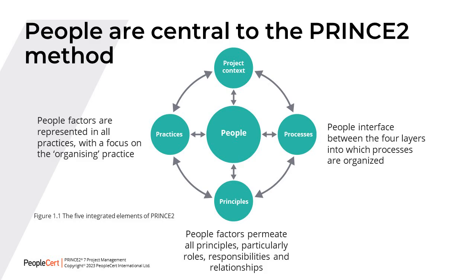The PRINCE2 processes are organised into four layers: commissioning, directing, managing and delivering. People factors such as behaviours, culture and relationships are included in the processes, explaining how people interface between the layers. As a reminder, people are central to the PRINCE2 method. Without them, projects simply cannot run.